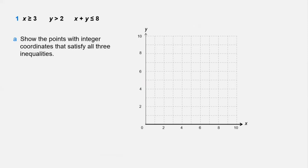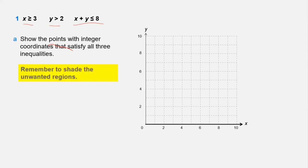Here you have a question with three inequalities: x ≥ 3, y > 2, and x + y ≤ 8. You have to show the points with integer coordinates that satisfy all three inequalities. We shade the unwanted regions only. First, we show x ≥ 3 by plotting the line x = 3.